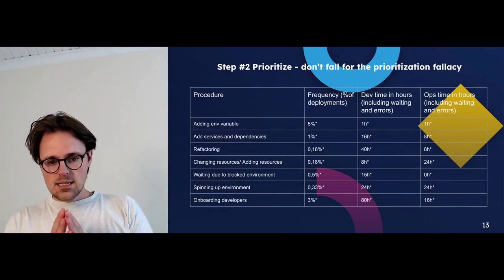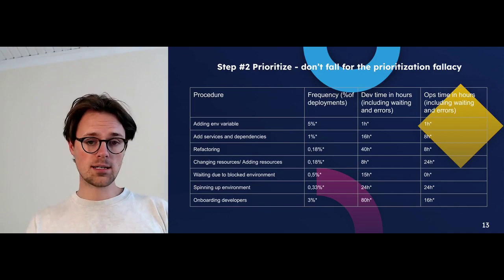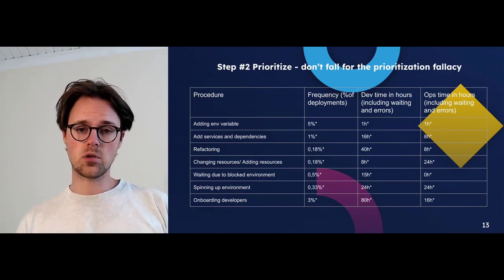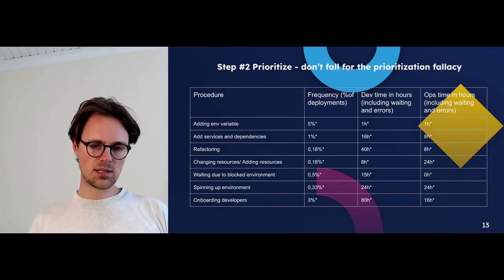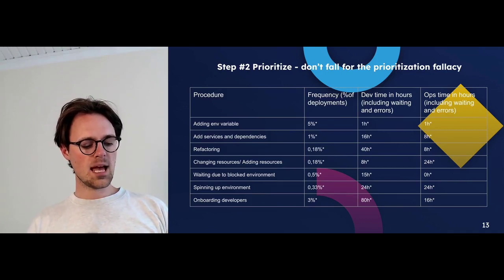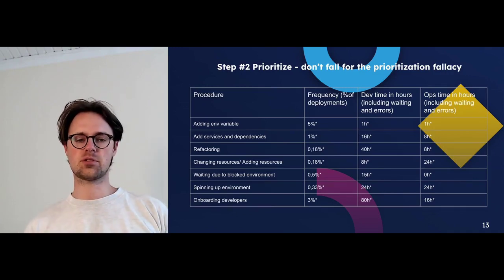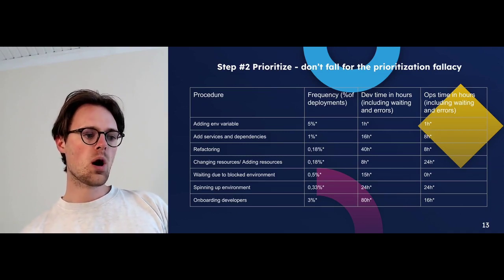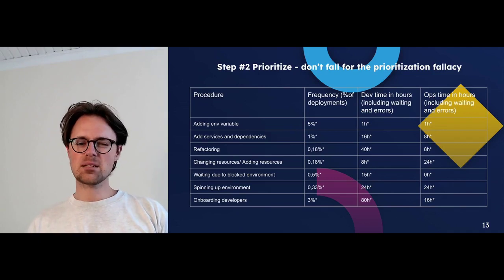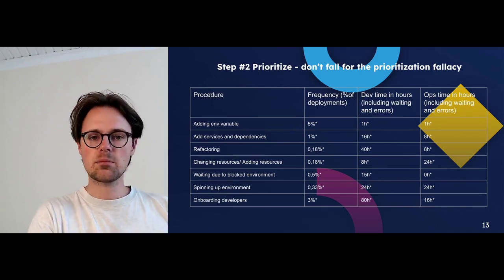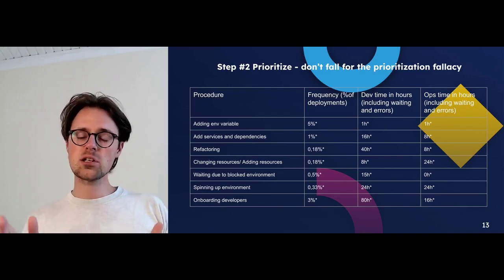Step two: prioritize. That is the most common fallacy I see in platform engineering — I wrote a long article on the 10 fallacies of platform engineering you should check out. People often think about the application lifecycle and say, 'Why don't we start at the beginning? Why don't we optimize how somebody spins up a new microservice or gets on board?' These things sound obvious, but just because something is at the beginning of the journey doesn't necessarily mean it gives you the return on investment that would move the needle.